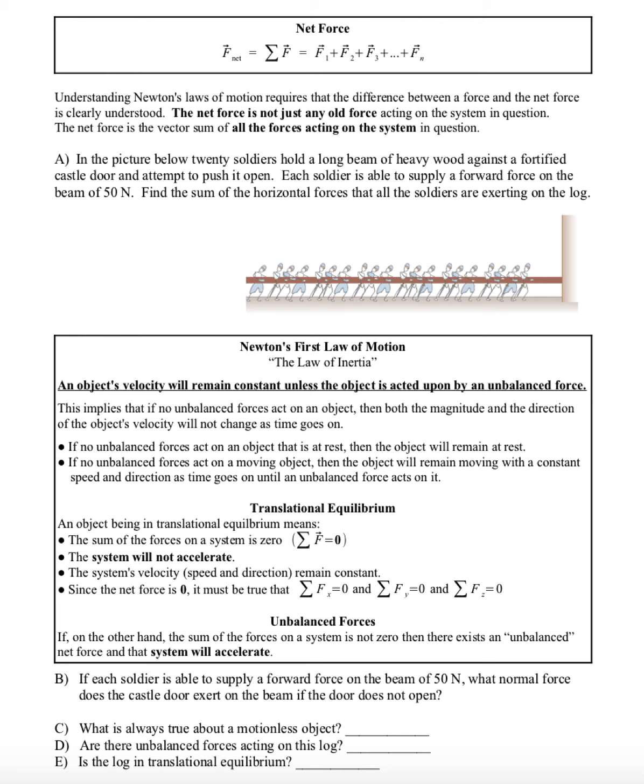This next example may make it clear. In the picture below, 20 soldiers hold a log against a fortified castle door and attempt to push the door open. Each soldier is able to supply a forward force on the beam of 50 Newtons. Find the sum of the horizontal forces that these soldiers are exerting on the log.